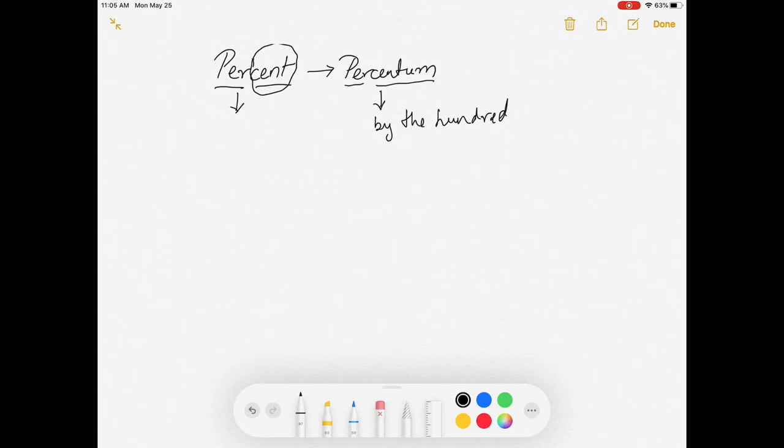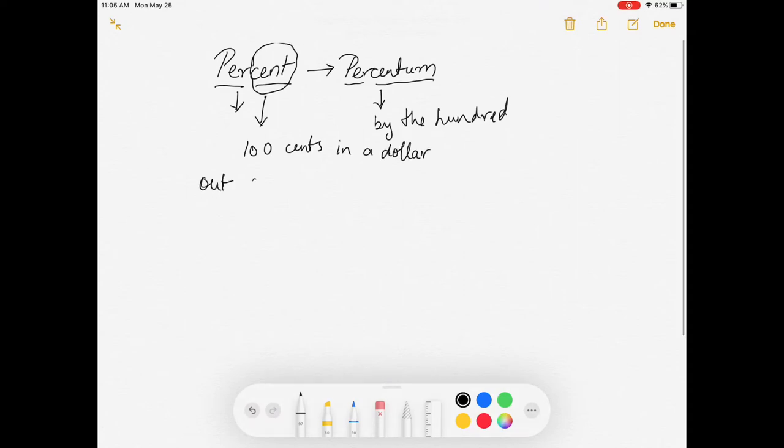And actually, if you notice, the word cent also relates to how many cents are there in a dollar, which is actually hundred cents in a dollar, right? So that's what a percent is, out of hundred.